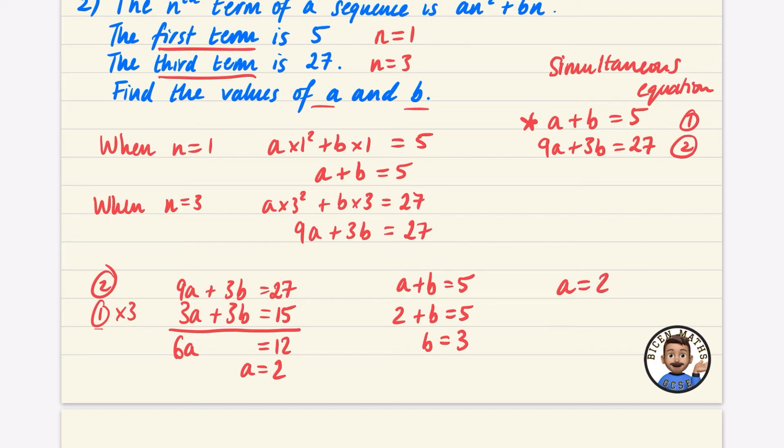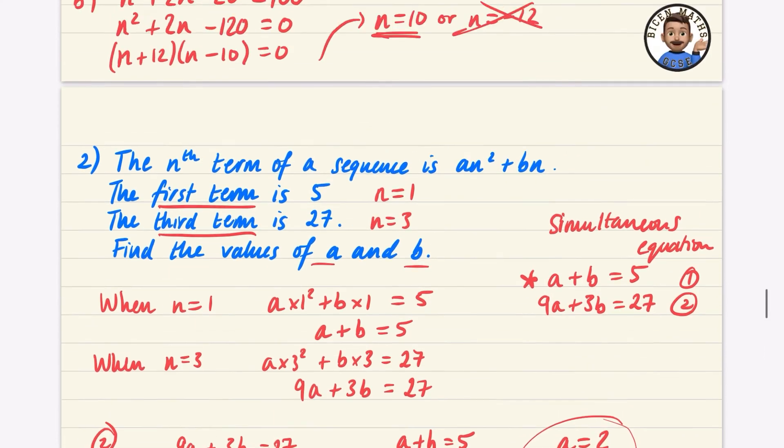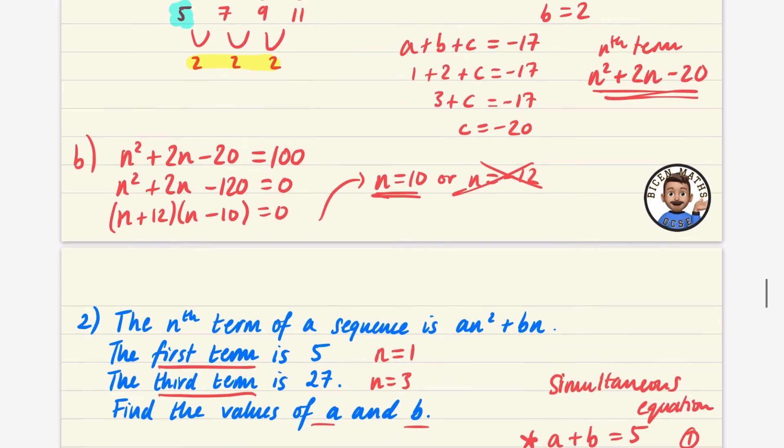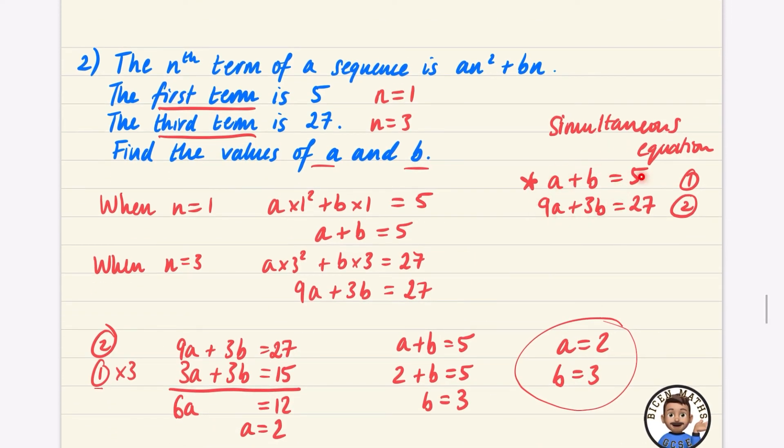So the values of a and b is that a equals 2 and b equals 3. I deliberately put this question in because although it looks like it's to do with the nth term, we actually don't have to do anything to do with this stuff at all. It was just a sneaky simultaneous equations question.